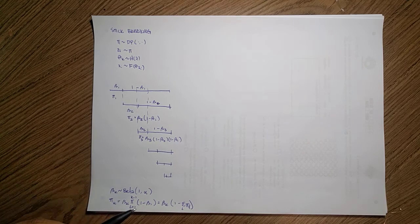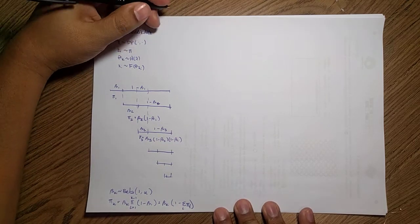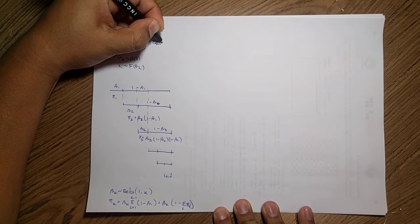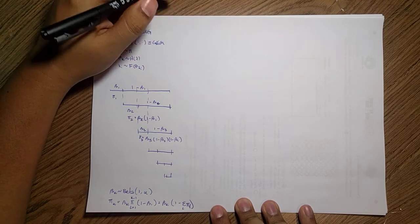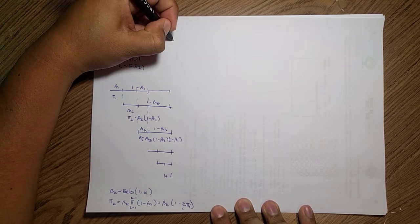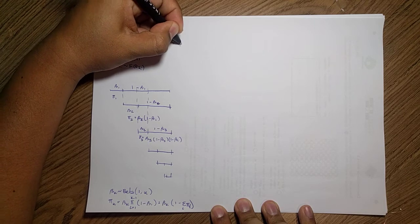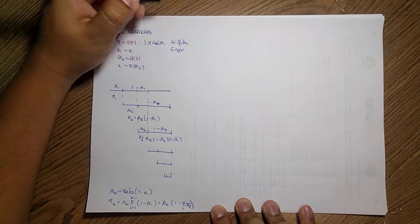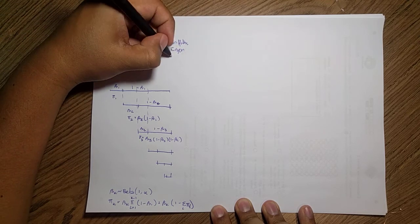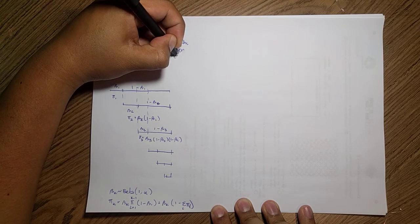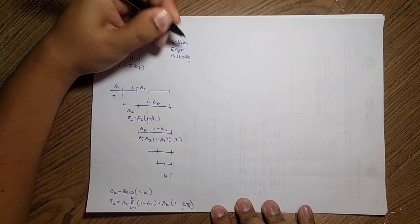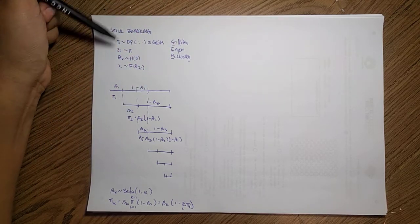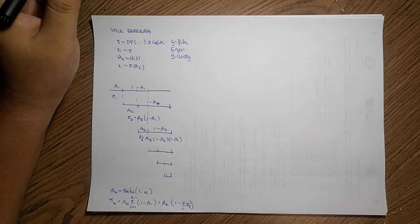This whole process is called a GEM distribution — named after its authors Griffiths, Engen, and McCloskey. So we say our sequence of mixture weights comes from this GEM process.